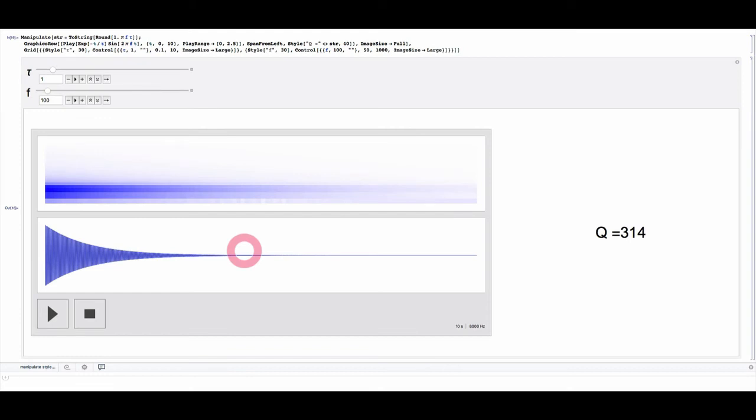So let's get some intuition about how quality factors work using audio signals. So here I've got Mathematica playing a sinusoidal tone, so a single frequency tone, with a decay time of one second and a frequency of 100 Hz, and it sounds like this. Kind of like a plucked guitar string that decayed about the same time as a guitar, and the quality factor is about 300.